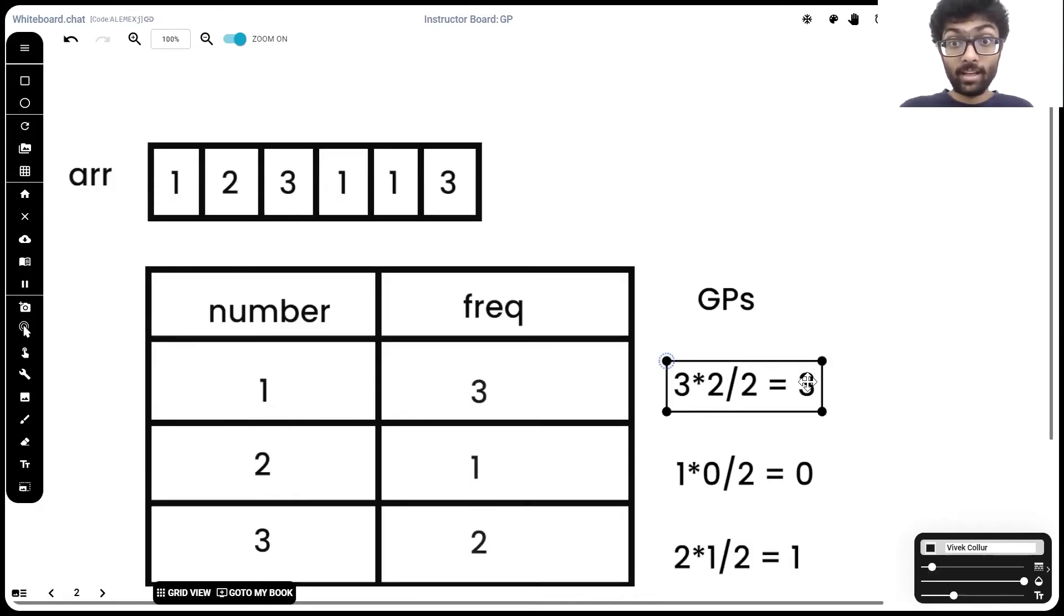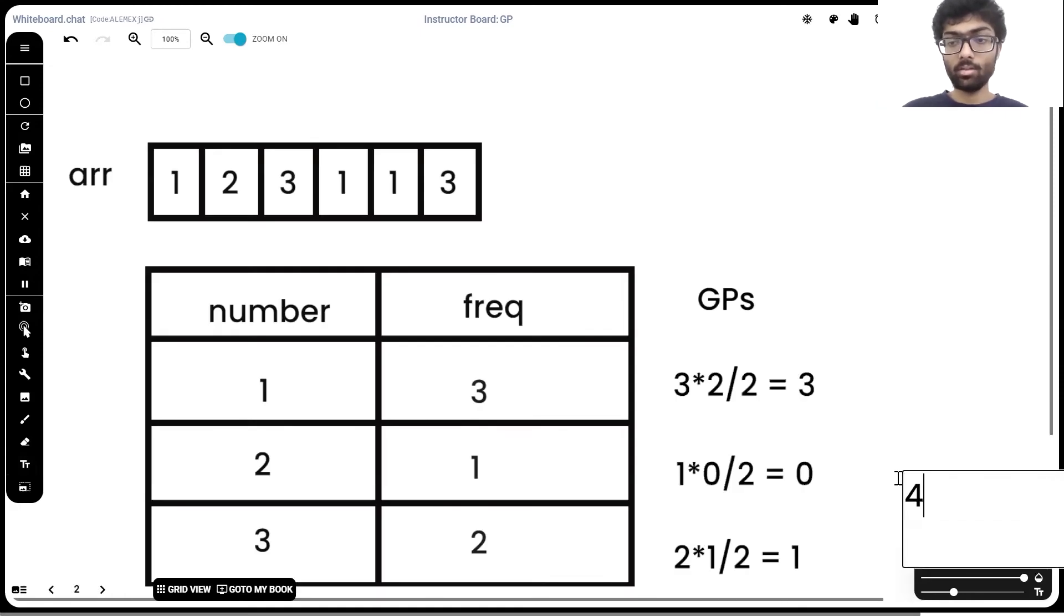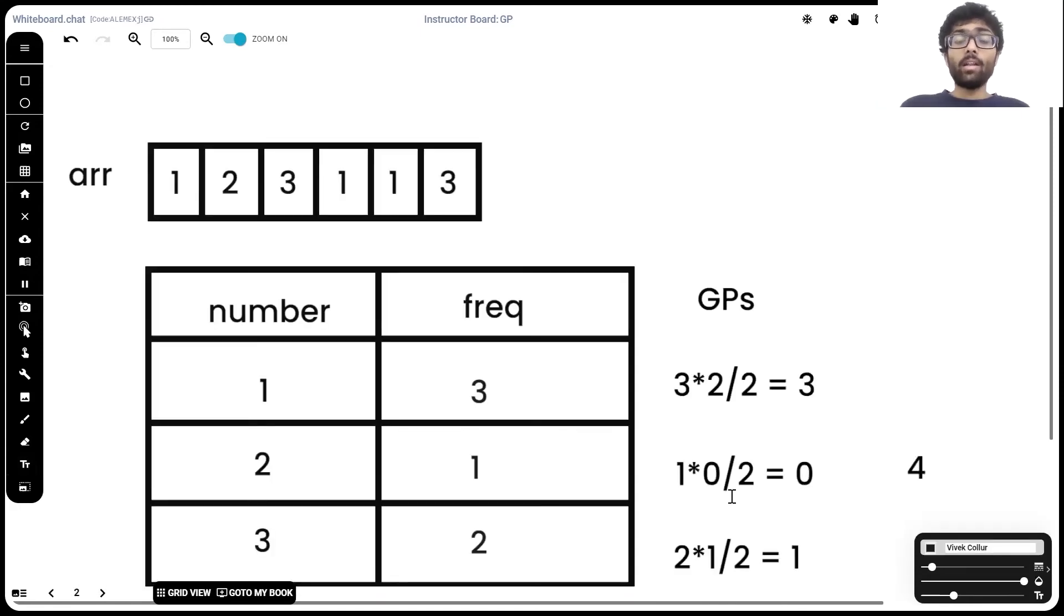Now to calculate the final number of good pairs, we simply take a tally. We add up each of these numbers, three plus zero plus one to give us an answer of four good pairs. Now a question some of you might be having and a very valid question is, if I were to use only arrays, building this frequency table would anyway take a time complexity of something like n squared. So why not just use the algorithm we discussed earlier, just have two for loops nested inside each other and count the number of similar elements.